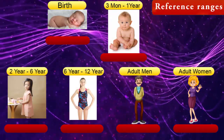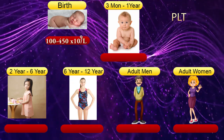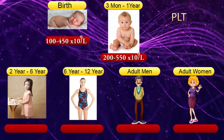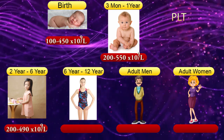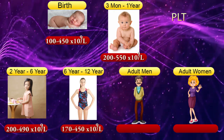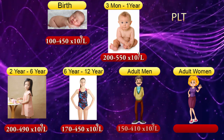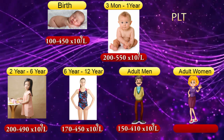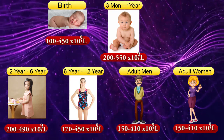Adult women MCHC: 31.5–34.5 grams per deciliter. Platelet count reference ranges. From 3 months to 1 year: 200–550 × 10⁹ cells per liter. From 2 to 6 years: 200–490 × 10⁹ cells per liter. From 6 to 12 years: 170–450 × 10⁹ cells per liter. Adult men: 150–410 × 10⁹ cells per liter. Adult women: 150–410 × 10⁹ cells per liter.